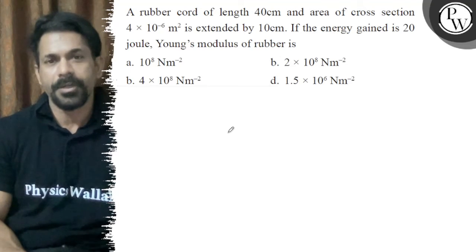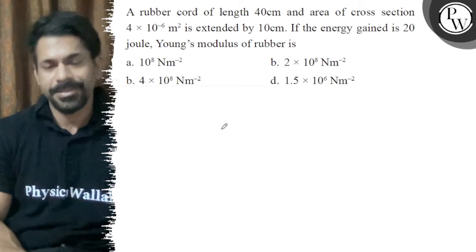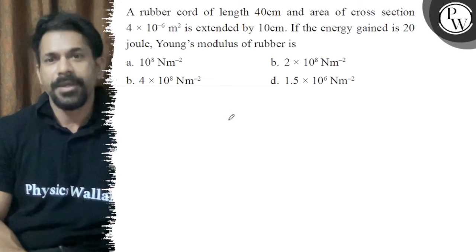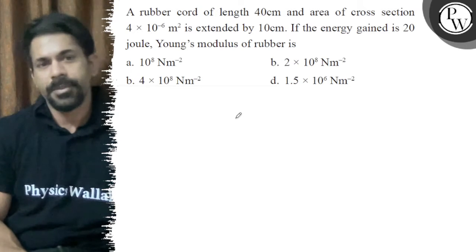Hello, let's see the question. A rubber cord of length 40 centimeter and area of cross section 4 times 10 power minus 6 meter square is extended by 10 centimeter. If the energy gained is 20 joule, Young's modulus of rubber is.